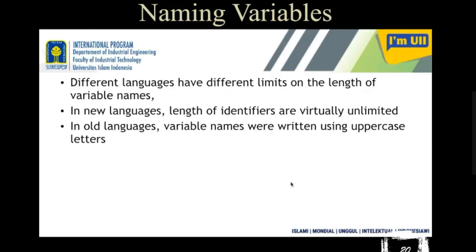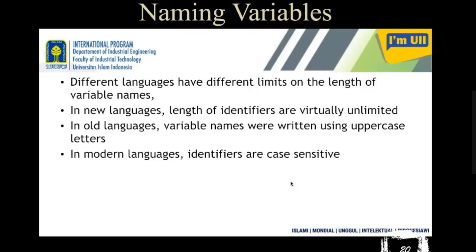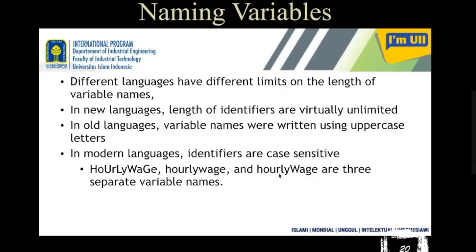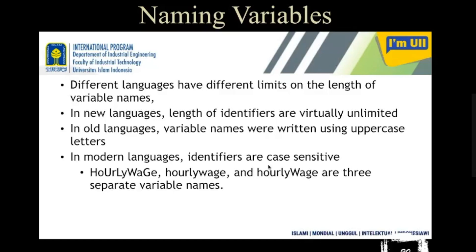In old computer languages, only uppercase was used, but nowadays you can use capital or small letters. In modern languages, identifiers and variable names are case sensitive. Case sensitive means that 'hourlyWage', 'HourlyWage', and 'HOURLYWAGE' have different meanings — they are three distinct names. In languages where case sensitivity does not matter, these three would have the same meaning.